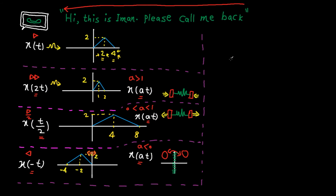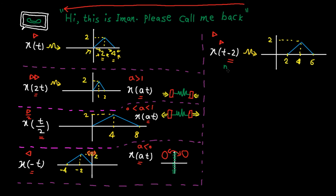Let's talk about another transformation which is called time shifting. Don't worry about the naming, just try to understand what it means. Let's look at x(t-2), which means we play the signal 2 units later. So instead of playing the signal now, we wait 2 units and then play it. This means the signal gets shifted in the time direction by 2 units — that's why this transformation is called time shifting. To plot the new signal, 2 goes to 4, 4 goes to 6, and 0 goes to 2. The amplitude stays the same. In general, when the time shift is negative, it means we play the signal later, and that's why we shift the signal to the right.